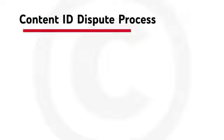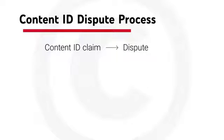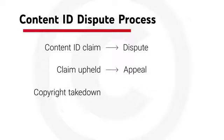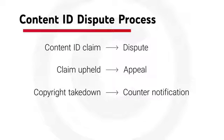Here's a recap of the process. First you receive a content ID claim. Then you can choose to dispute the claim. Then if they uphold the claim, you can choose to appeal. From there the copyright owner can submit a copyright takedown. If you're confident that you have the proper rights, you can submit a counter notification, which would force the copyright owner to take court action to keep the content down.